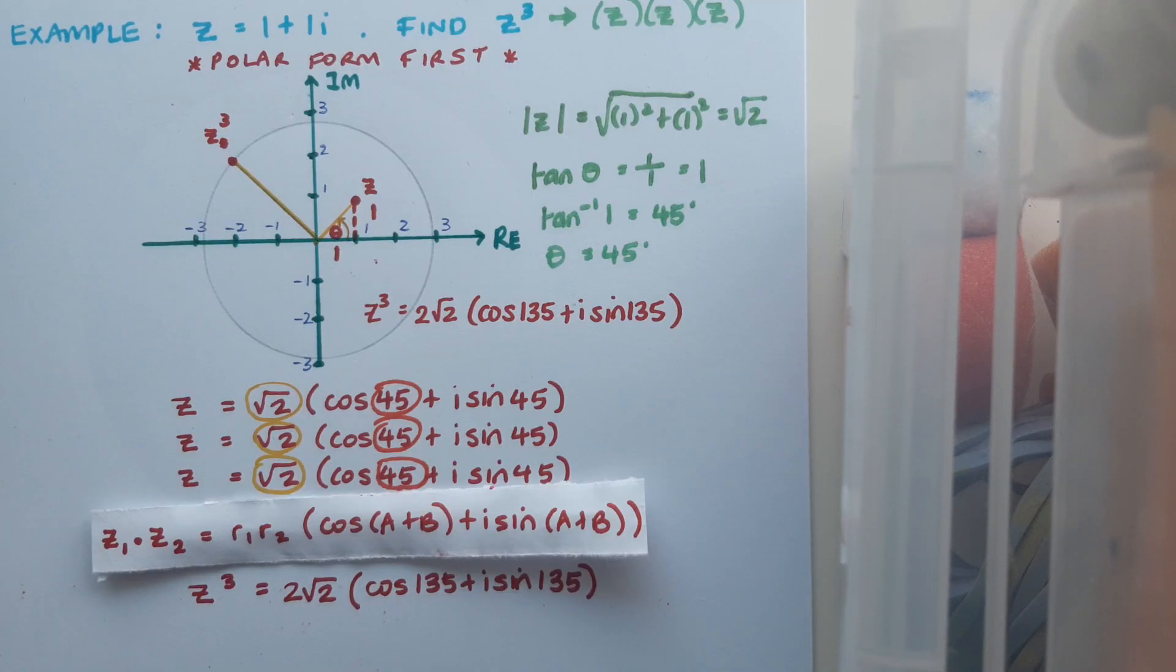Have a think about the process that we went through to get z cubed. Is there a variation of this rule that I could use? A slightly more condensed way of saying that I'm multiplying modulus by modulus by modulus and adding up all the angles. Have a think about that, given particularly that the modulus is the same in each case and the angle is the same in each case. In a future video, we'll be exploring that, and it's actually a theorem we come across in complex numbers called De Moivre's Theorem.